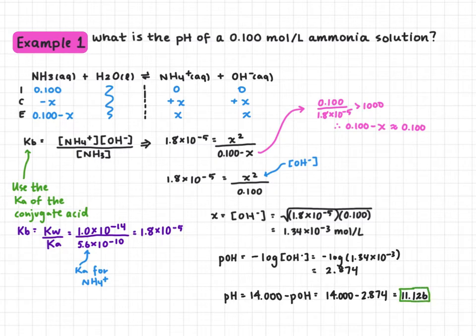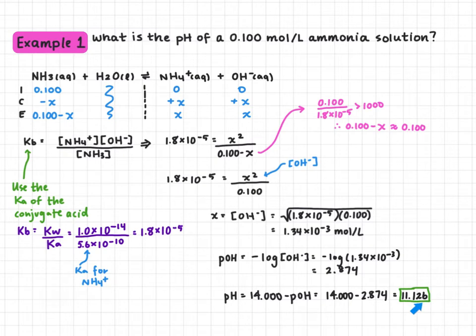When doing these questions, the big mistake students often make is forgetting this final step. They'll get the hydroxide concentration, solve for pOH, and put that in as the pH. Really think about what it should be — this is a base, so the pH of the final solution should be above 7. Always double-check that your answer makes sense for what you're solving for.